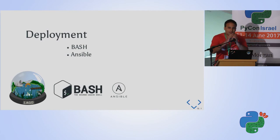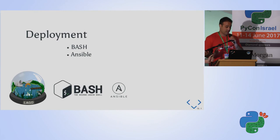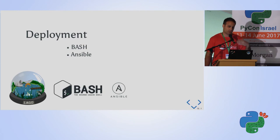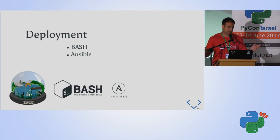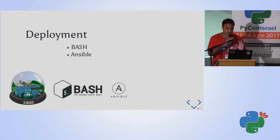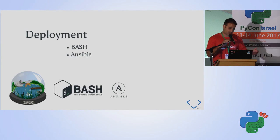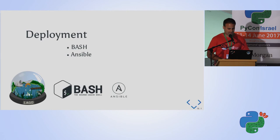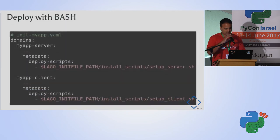Can LAGO help me deploy my application? Sure it can. LAGO provides two ways to deploy: the first is using bash scripts, and the second — the cooler one — is using Ansible. In one sentence: Ansible is an automation engine which automates application deployment and configuration.